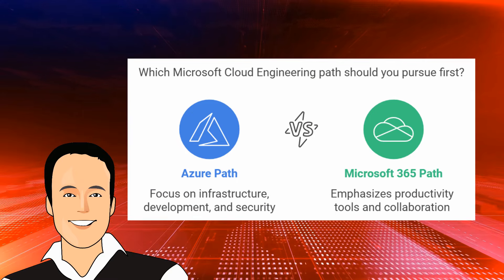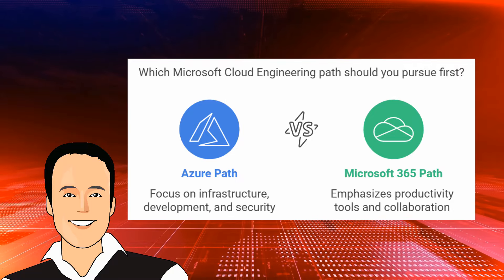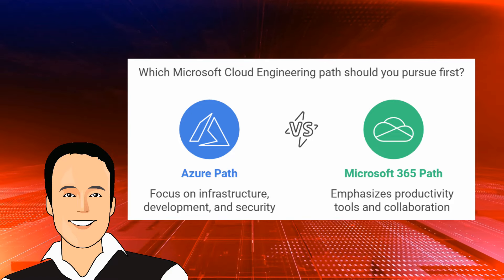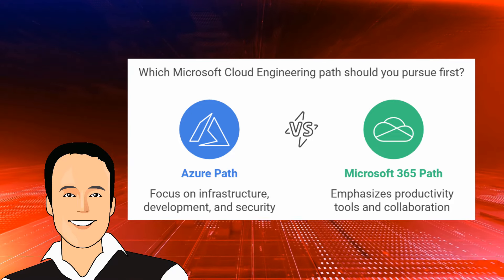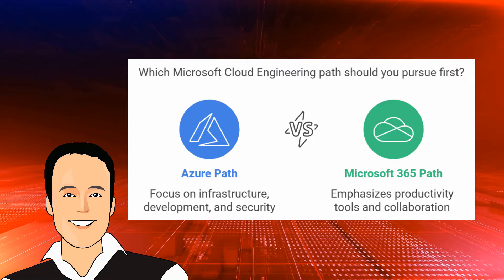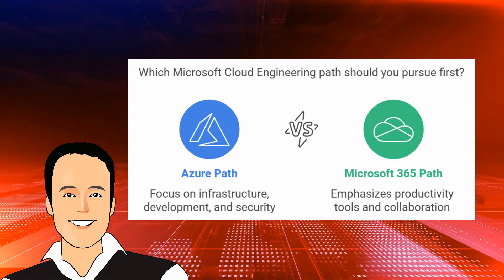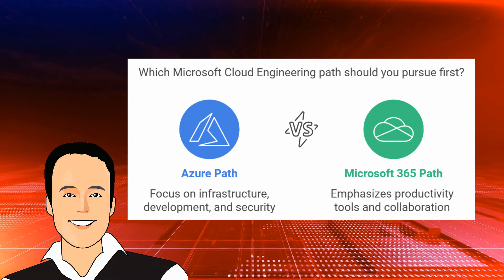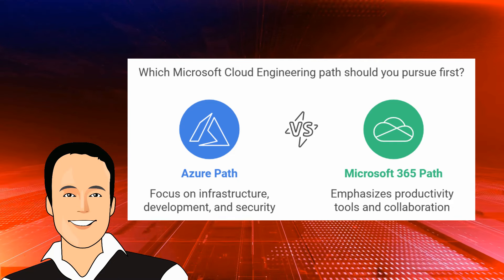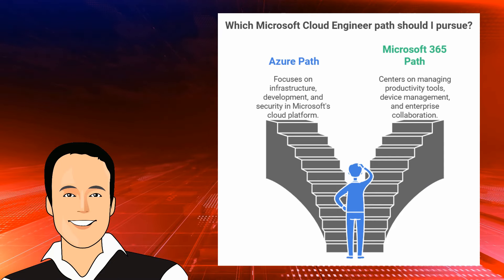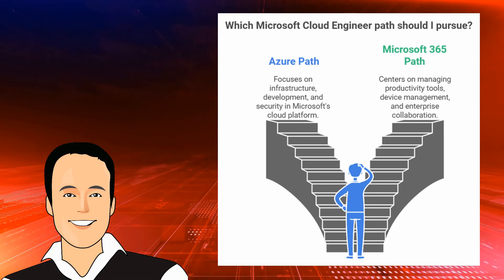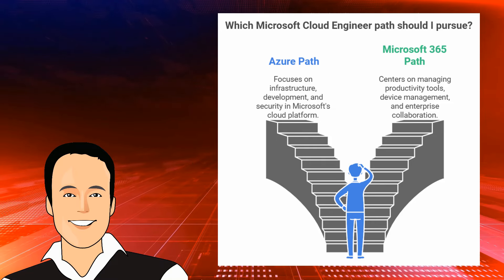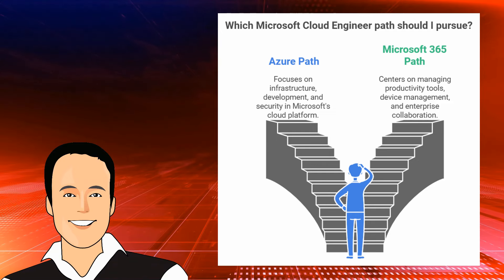There are two primary paths to becoming a Microsoft cloud engineer. The first is the Azure path, which focuses on infrastructure, development, and security in Microsoft's cloud platform. The second is the Microsoft 365 path, which is all about managing productivity tools, device management, and enterprise collaboration. Both paths are valuable, and it's perfectly fine to start with one based on your interest or current opportunities.